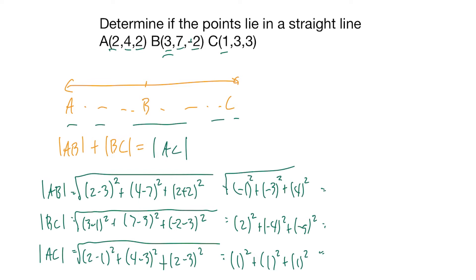Take the square root of all those. This will be 2 plus 9 plus 16, this will be 4 plus 16 plus 25, this will be 3.